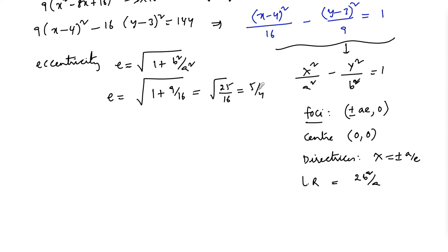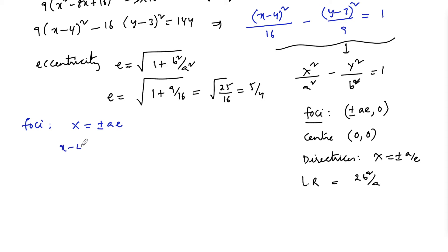Eccentricity is 5/4. Now let us find the foci. Foci is at X = ±ae. Here capital X corresponds to x - 4, so x - 4 = ±ae = ±4 × (5/4) = ±5.